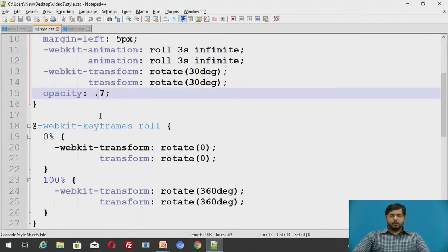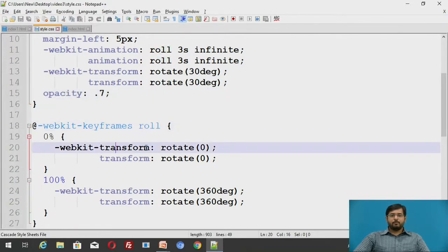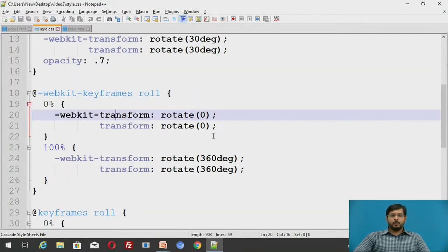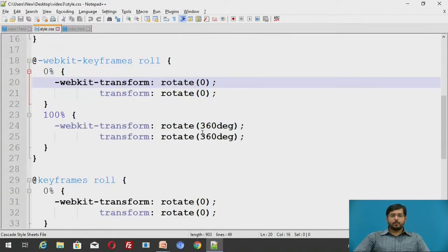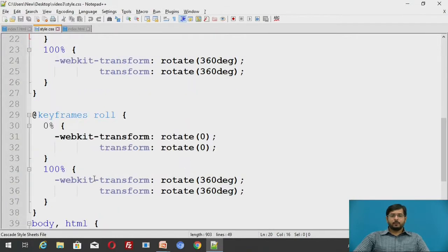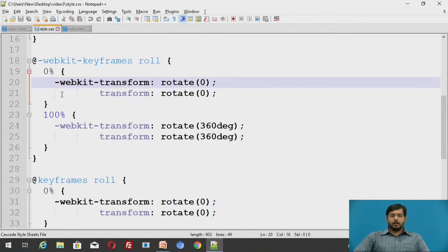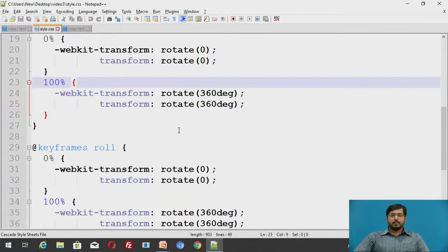Now, we are using a keyframe with a key name roll which defines the rotate of 0 degrees when it is 0% and when it is at 100% it should be at 360 degrees. So likewise it will rotate.